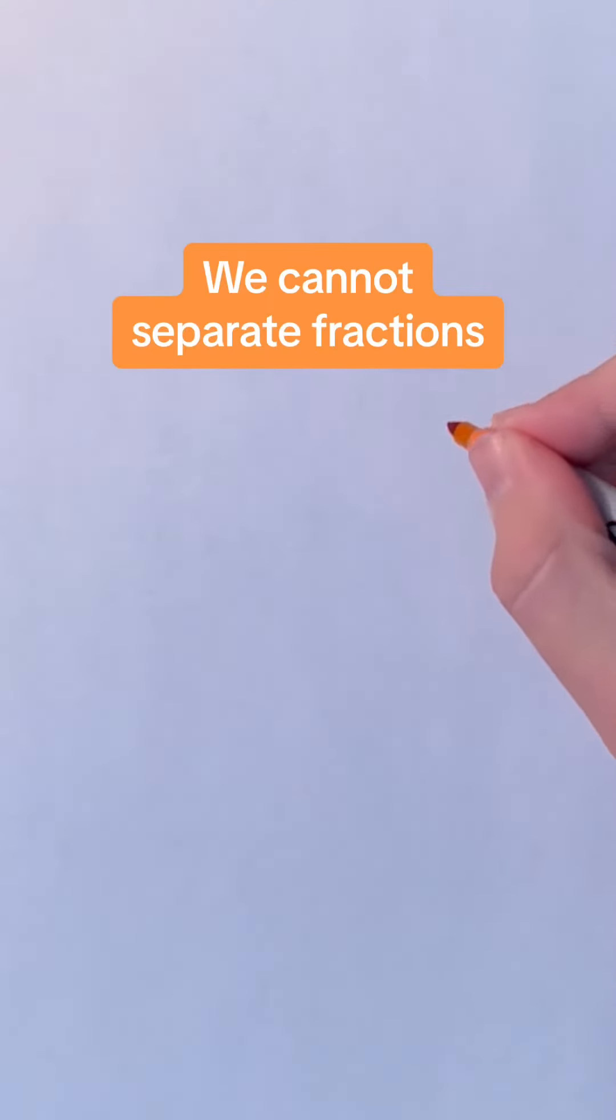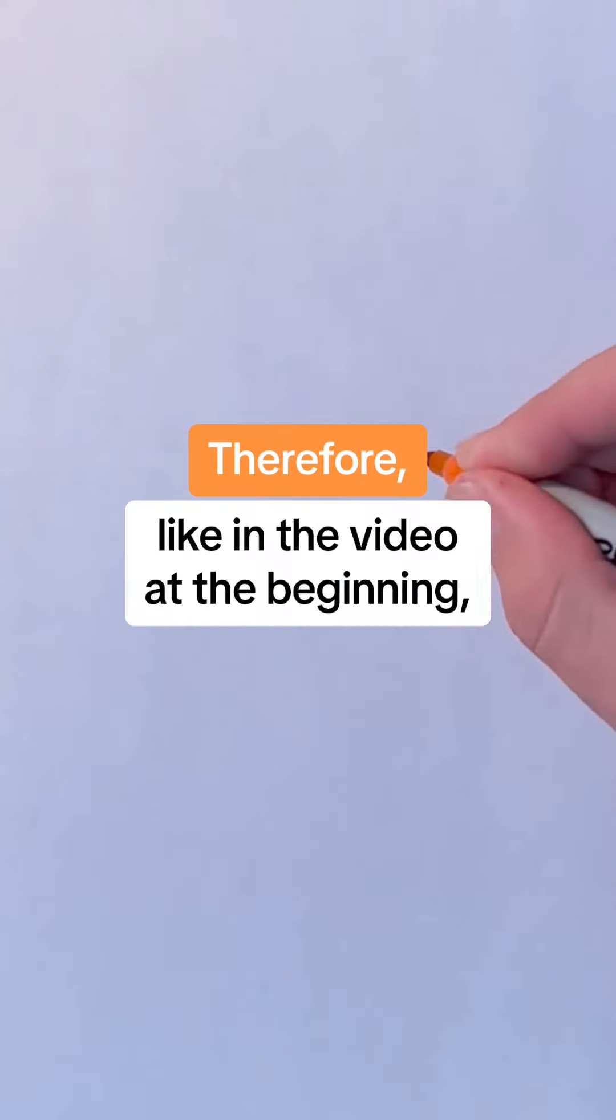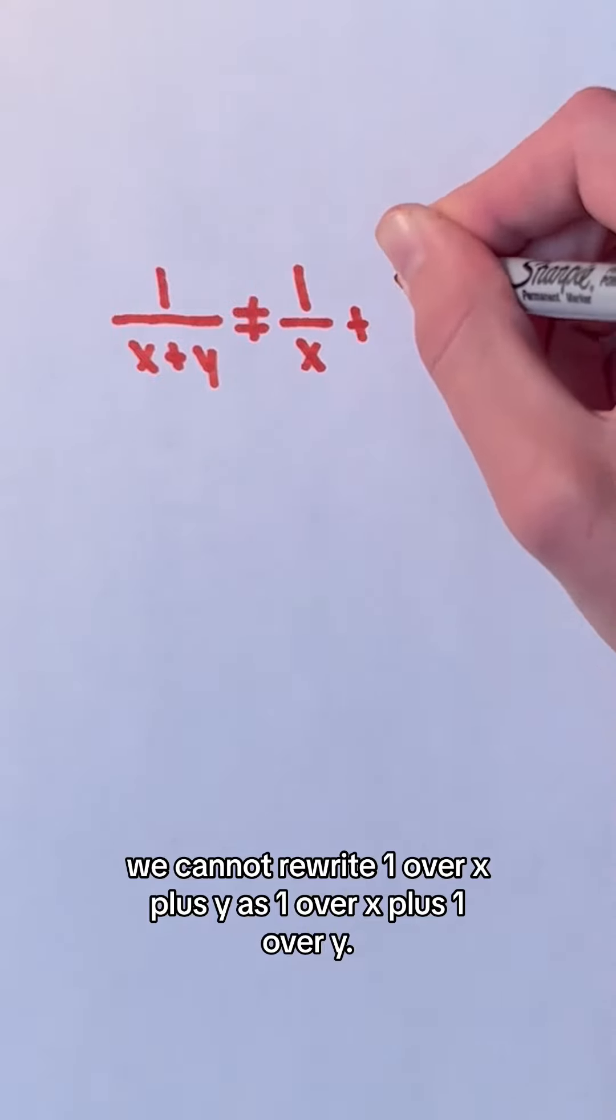We cannot separate fractions across the denominator if there are multiple terms in the denominator being added. Therefore, like in the video at the beginning, we cannot rewrite 1 over x plus y as 1 over x plus 1 over y.